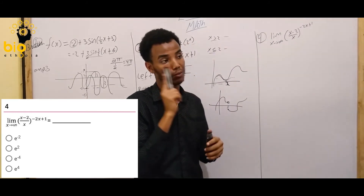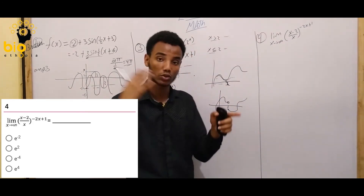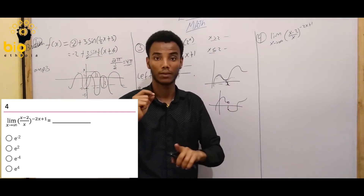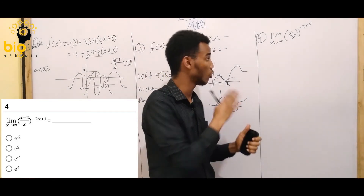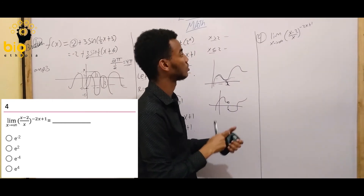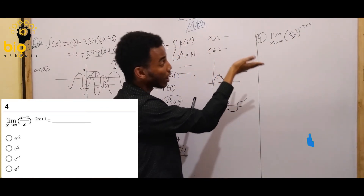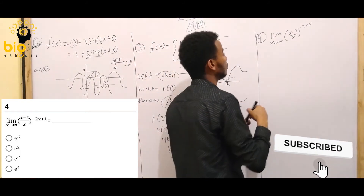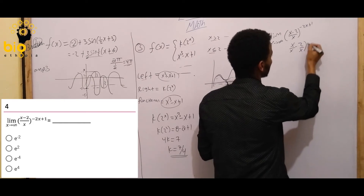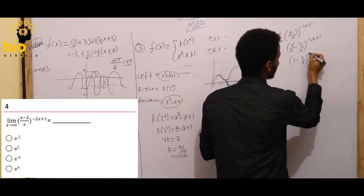We can simplify it. We can split it up. The limit as x goes to infinity — dividing numerator and denominator by x: x over x minus 2 over x. You can use the power of minus 2x plus 1 — we simplify to get the limit as x goes to infinity.